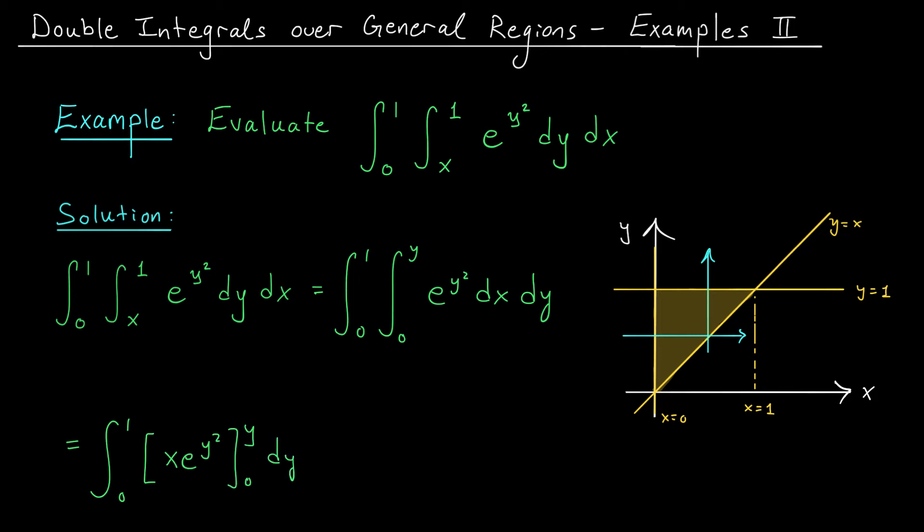By subbing in our bounds, we get the integral from 0 to 1 of y e to the y squared minus 0 e to the y squared, which is, of course, the same as the integral from 0 to 1 of y e to the y squared dy.